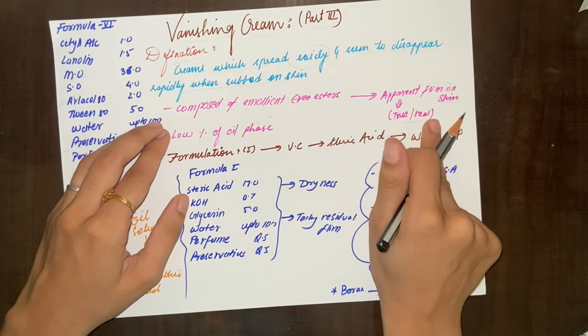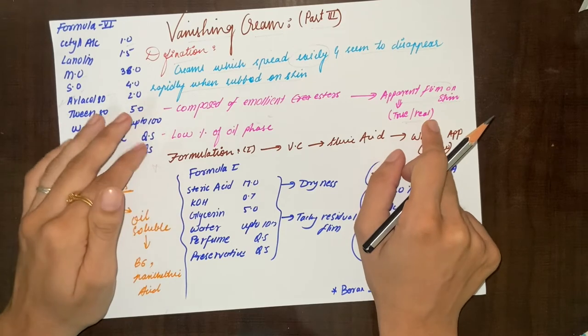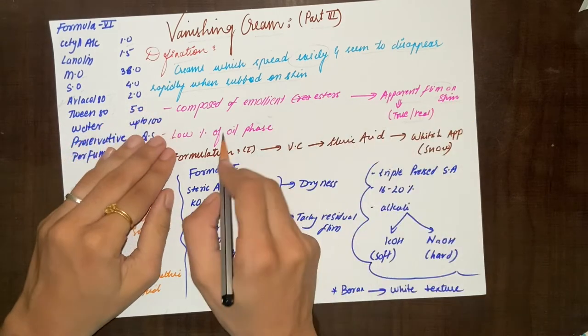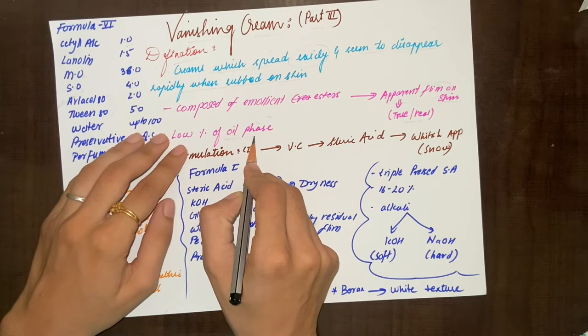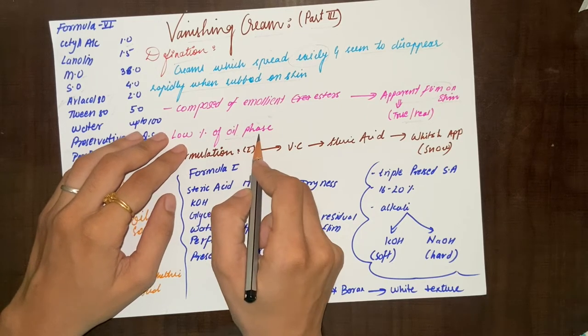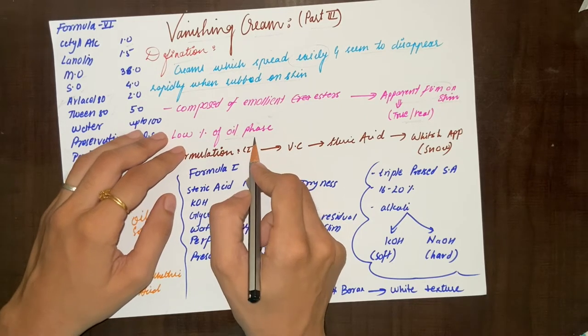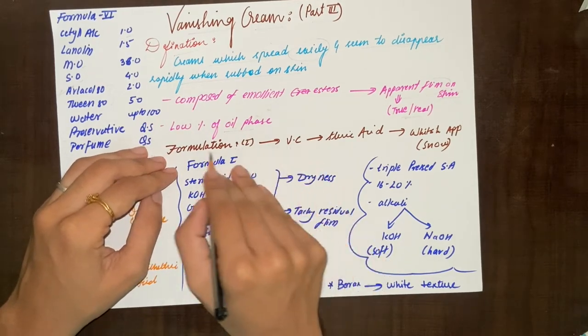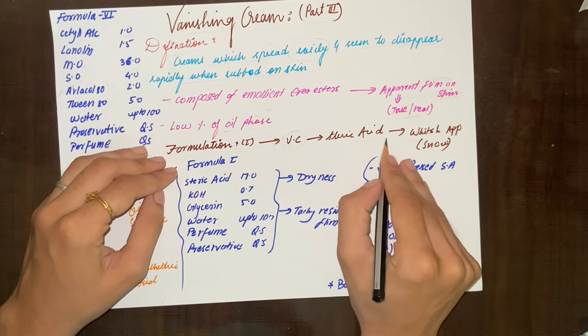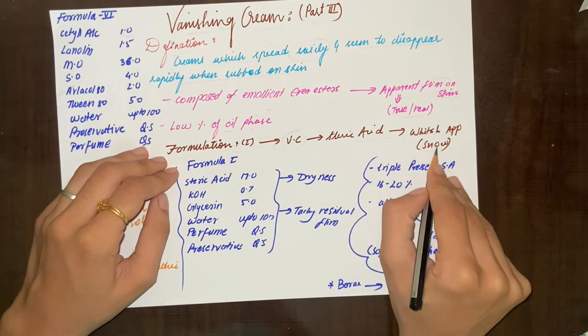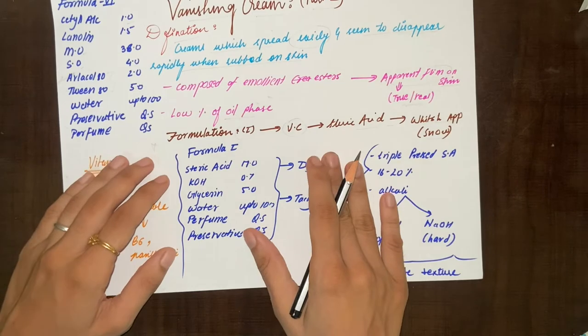Vanishing cream formulation uses low percent of oil phase because we have an apparent film form on the skin. Sometimes if we use oil phase it will be greasy. Vanishing cream formulation uses steric acid, and steric acid cream gives whitish appearance, which means snow-like appearance.